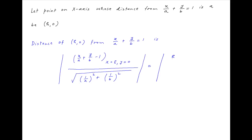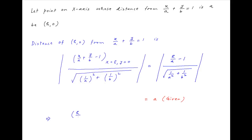This equals the absolute value of h upon a minus 1, divided by the square root of 1 upon a squared plus 1 upon b squared. This is given to be equal to a. It therefore follows that h upon a minus 1, divided by the square root of 1 upon a squared plus 1 upon b squared, is equal to plus or minus a.